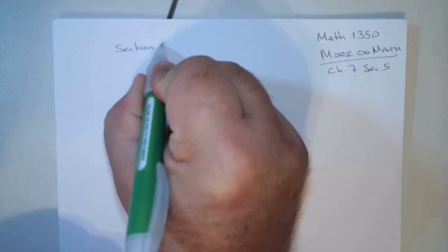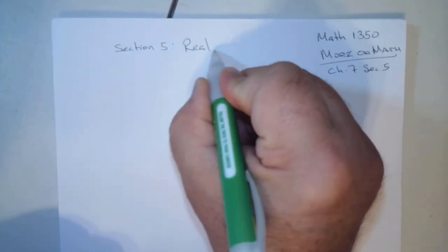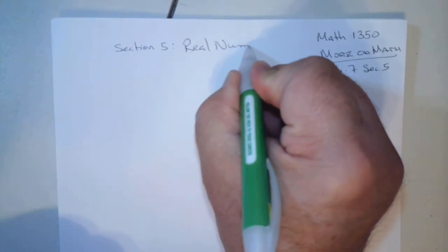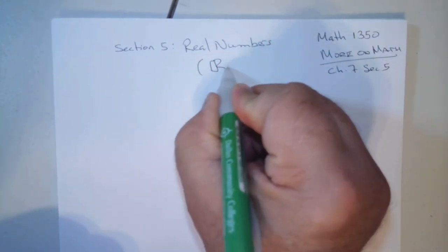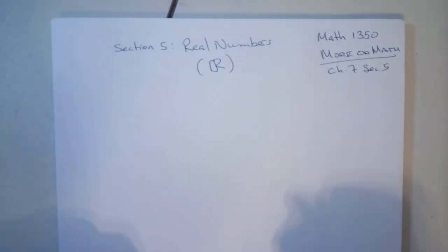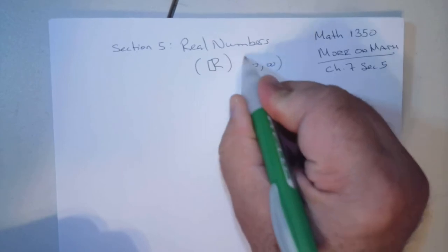Section 5 deals with the real numbers. Symbolically, that's that simple. It means everything from negative infinity to positive infinity.